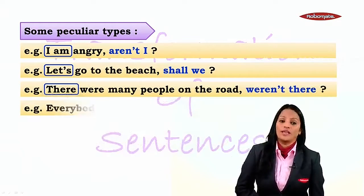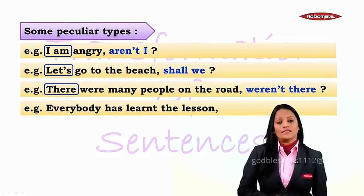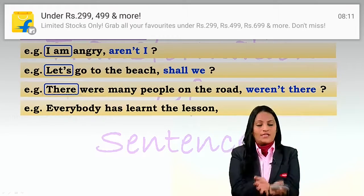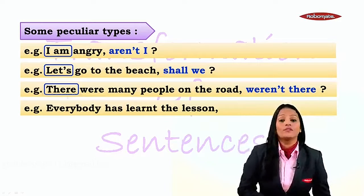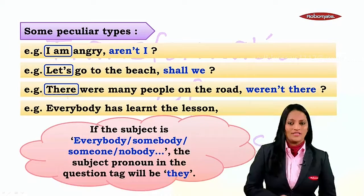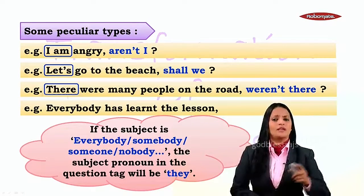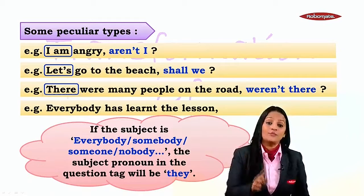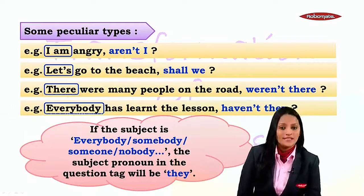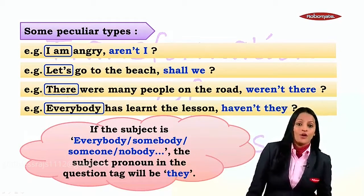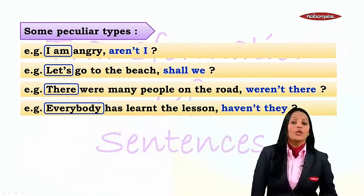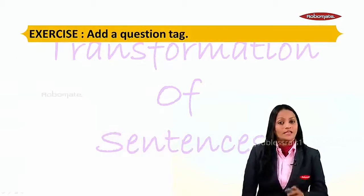Now: 'Everybody has learned the lesson.' When we say 'everybody', we are talking about each and everyone, so it is like a group of people, but we use a singular verb 'has' because each one of them has learned the lesson. But when we create the tag, if the subject is 'everybody', 'somebody', 'nobody', 'someone', or 'somebody', the subject pronoun is going to be 'they'. So you say: 'Everybody has learned the lesson, haven't they?' You will not say 'hasn't they', and you can't say 'hasn't he or she' because we don't know who all are included - therefore we say 'haven't they'.